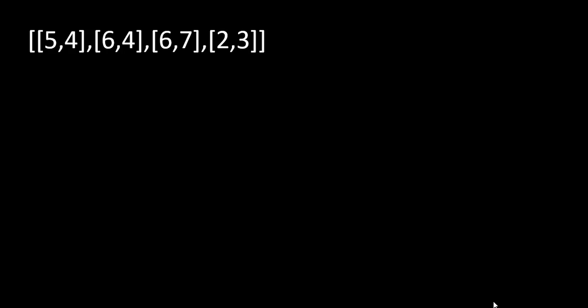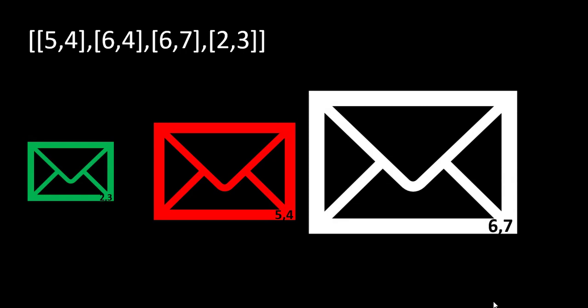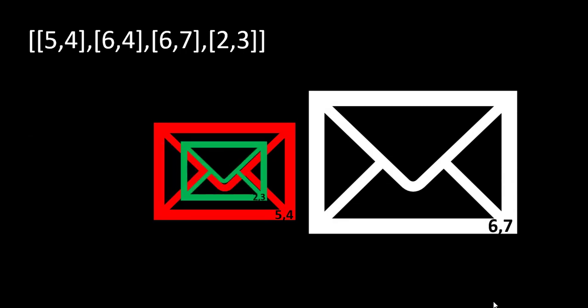Suppose this is the example given to us and we need to find how many envelopes we can Russian doll. We can Russian doll 3 of the envelopes: 2,3, 5,4, and 6,7. We put 2,3 into 5,4 as the height and width are smaller, and similarly put that envelope into 6,7. Let's bring our attention to the width of these envelopes first — they are in increasing fashion. We can make this array increasing by sorting it based on width.